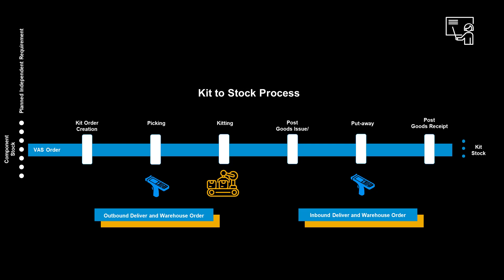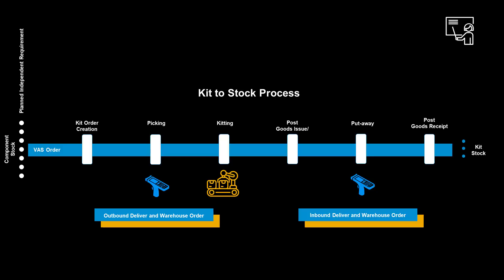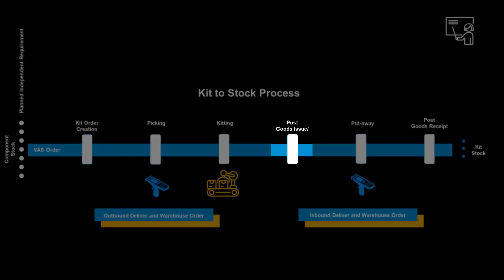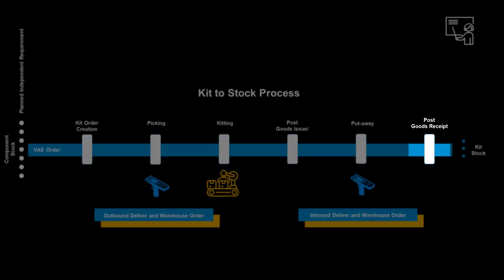As soon as the kit to stock order has been created, an outbound delivery and its connected warehouse order will ensure that components are brought to the workstation. After kitting, we will post goods issue for the components before an inbound delivery and its subsequent warehouse order will bring the finished kits into stock. The process ends with goods receipt of the newly created kits.